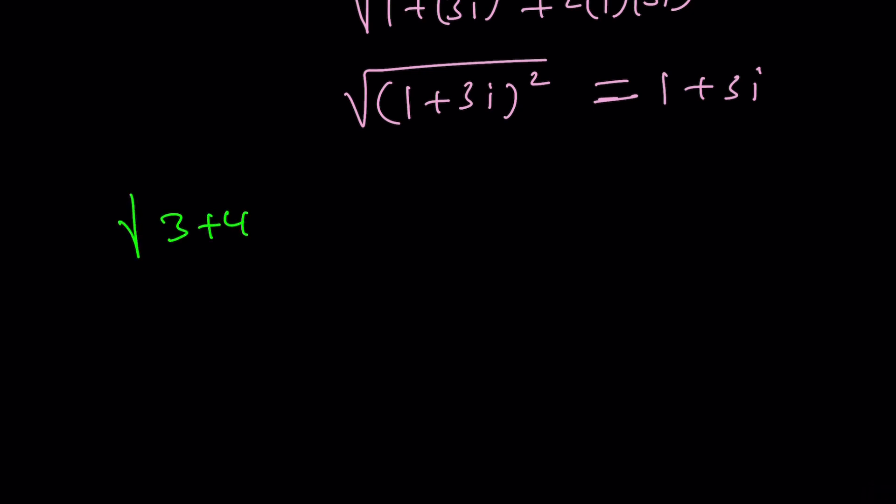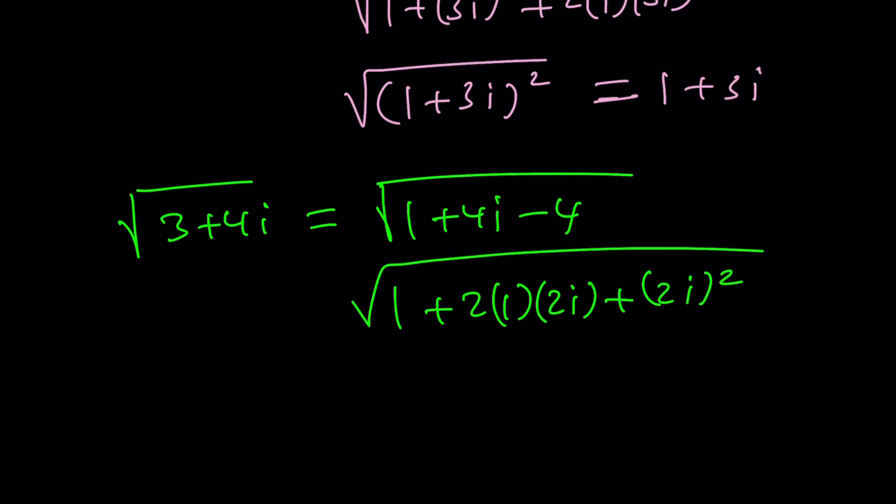Let's go ahead and take a look at the other one now. What's the square root of three plus four i? Let's find it in an easy way. We can again write this as one plus four i minus four. And then this will become one plus two times one times two i. And this is two i quantity squared.